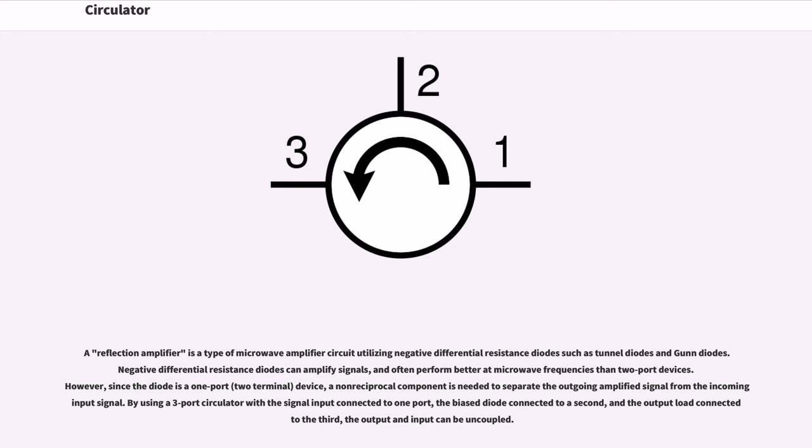By using a three-port circulator with the signal input connected to one port, the bias diode connected to a second, and the output load connected to the third, the output and input can be uncoupled. Well, thanks for watching.